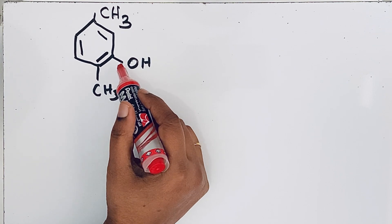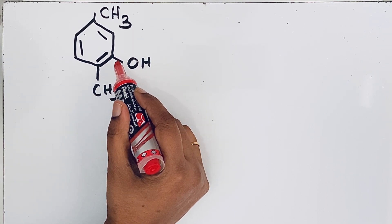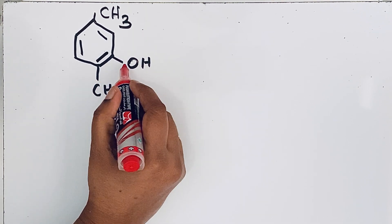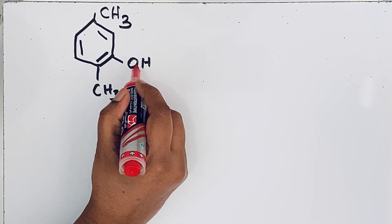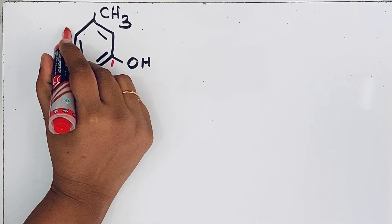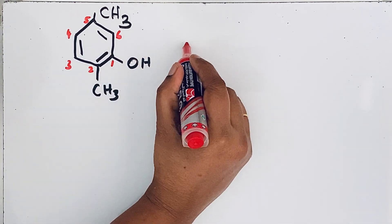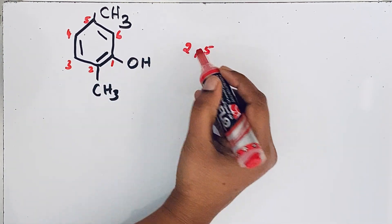We can give the numbering from clockwise and anti-clockwise. Let us start giving numbering from clockwise. This OH group should get the lowest number because it is a functional group. 1, 2, 3, 4, 5, 6. It is like 2, 5.